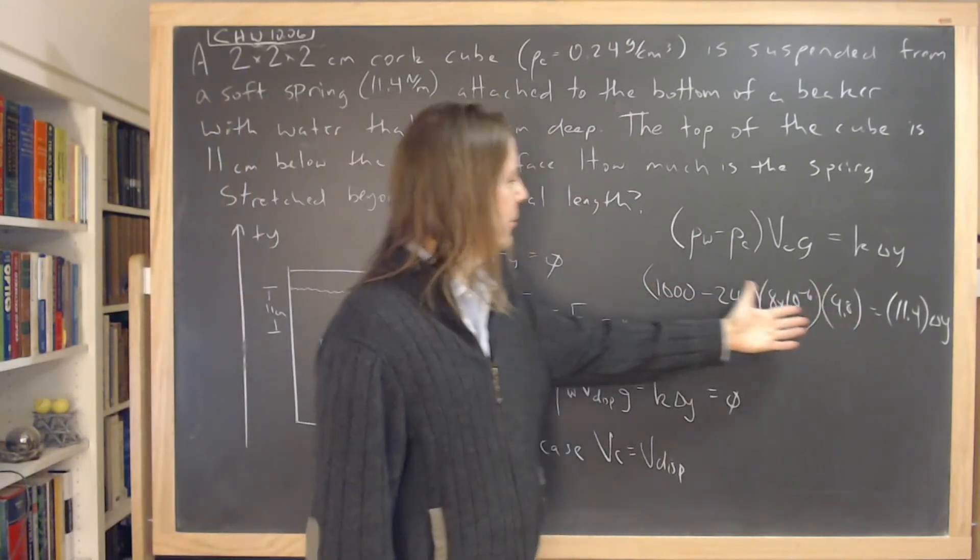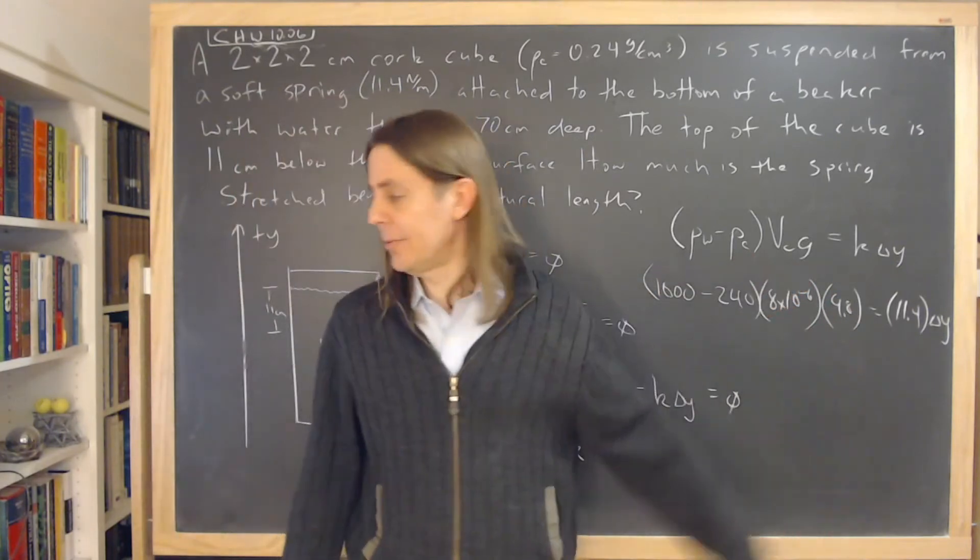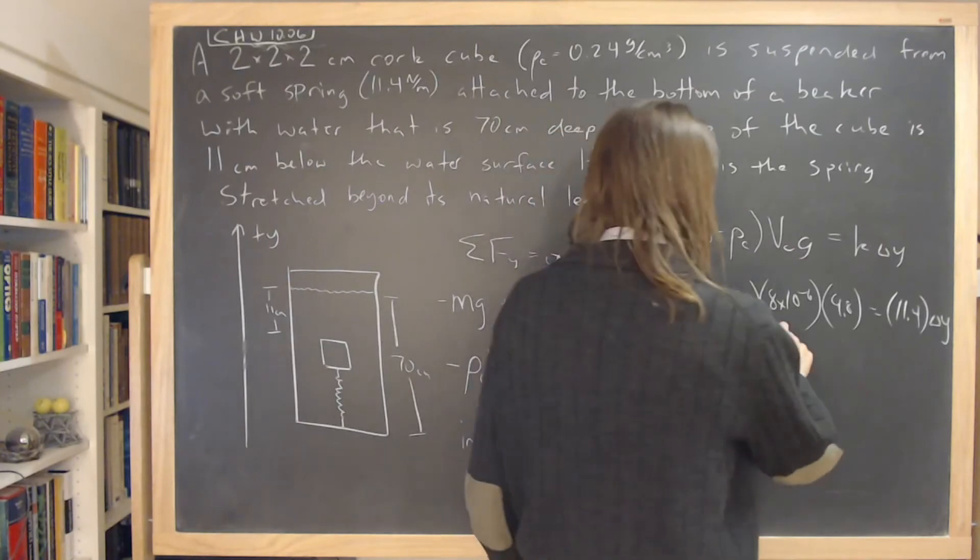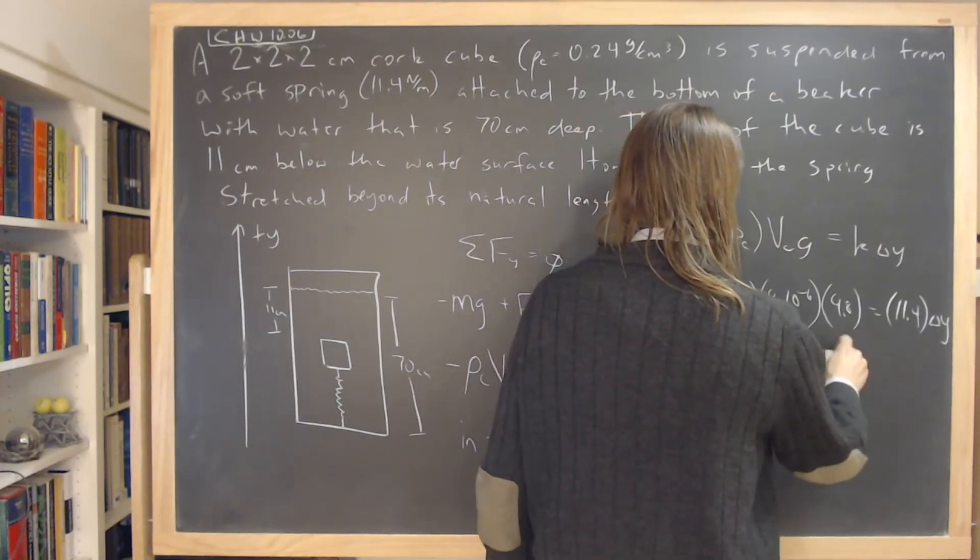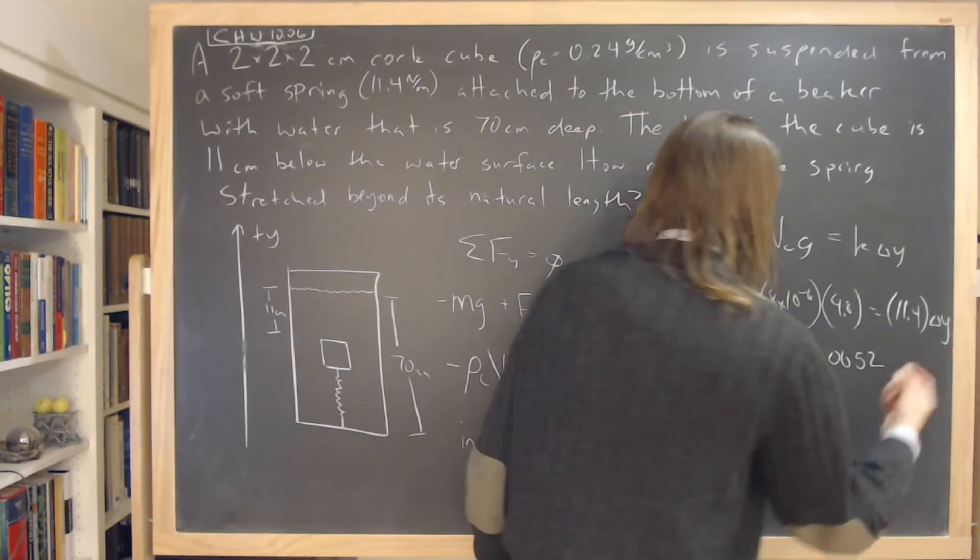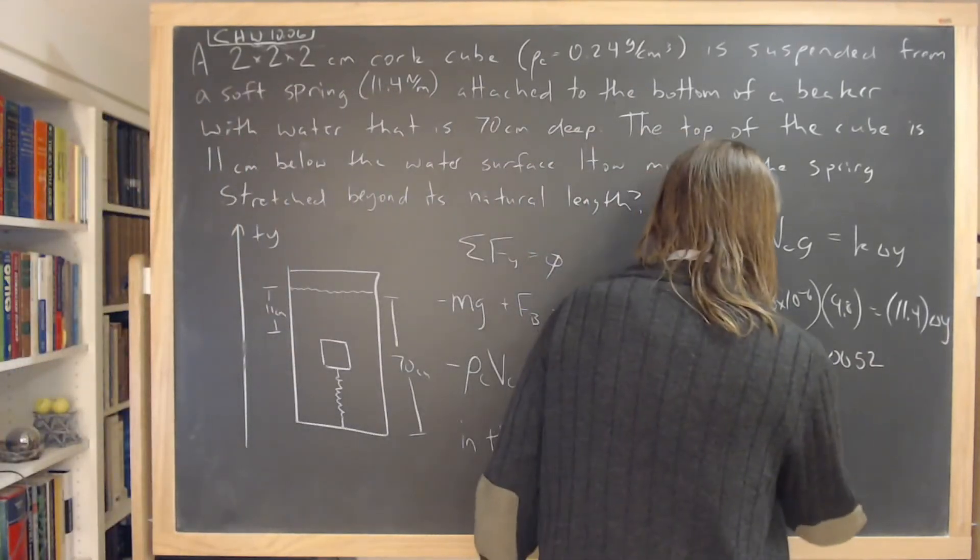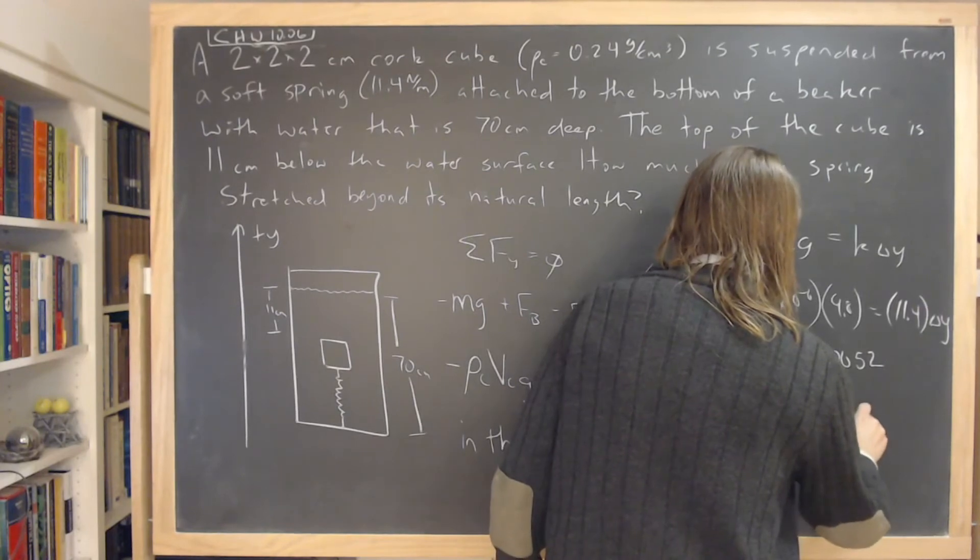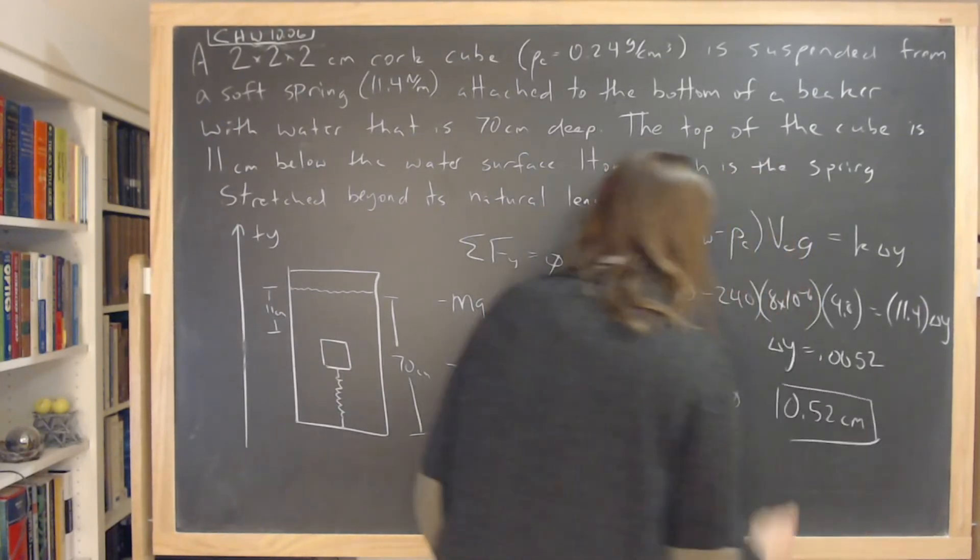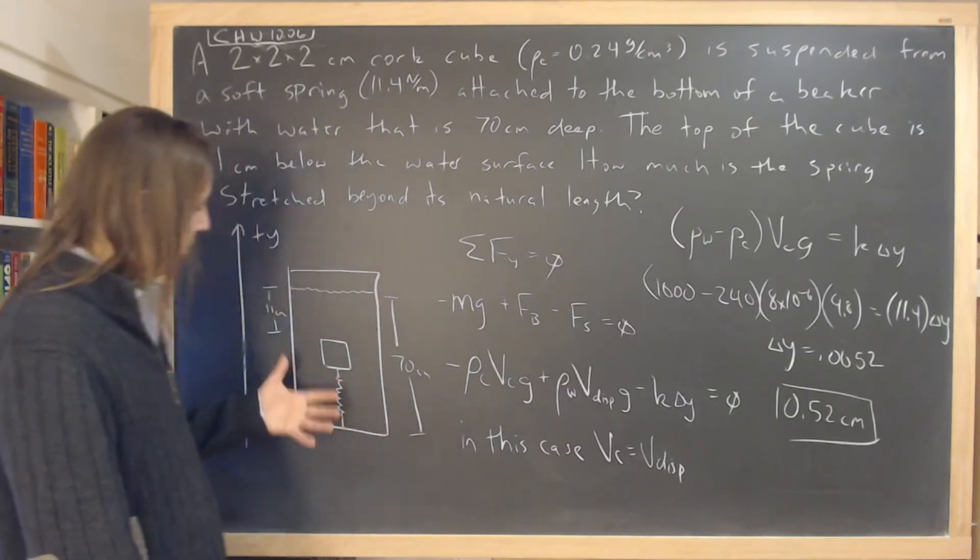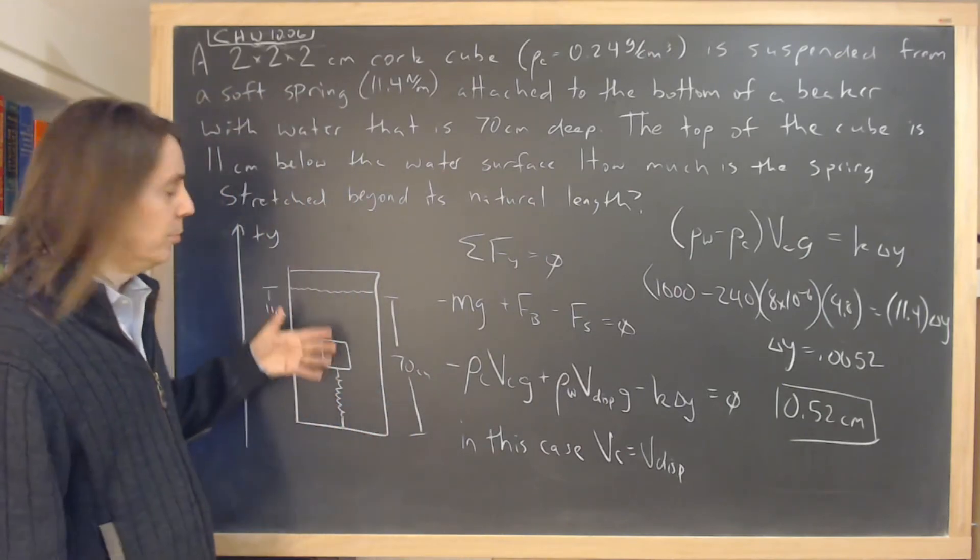And then how much the string is, the spring is extended. So you can see from there, it's just numbers at this point. It's 760 times that, times that, divided by that. And you get 0.0052. But it asks for it in centimeters, or at least in the online system it asks for it in centimeters. So the answer is 0.52 centimeters. That's how much the spring has to be stretched for this to remain suspended, which means static.